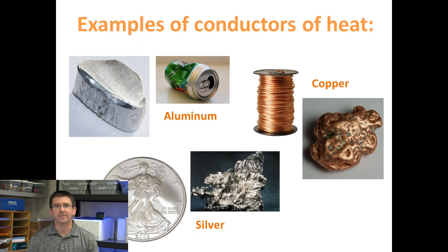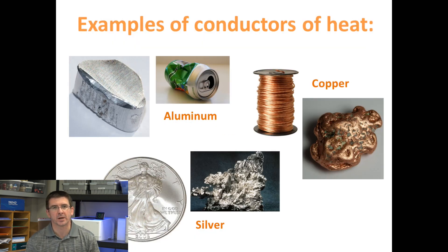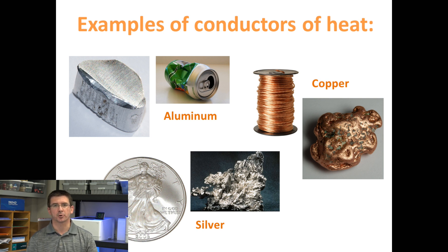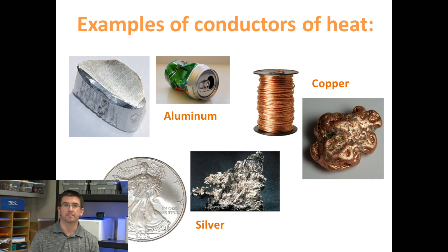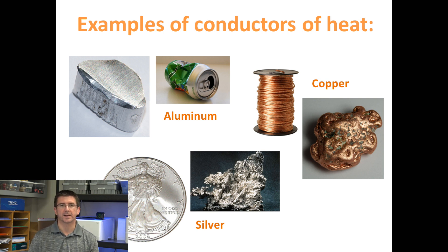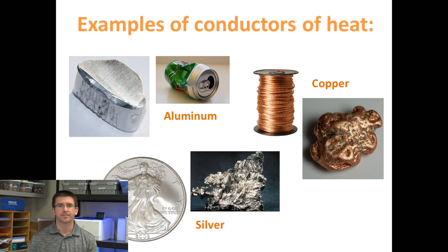When we think of conductors of heat, most often we think of metals — things like aluminum, copper, iron, silver, and gold — which are very good conductors because they let heat pass through very easily.